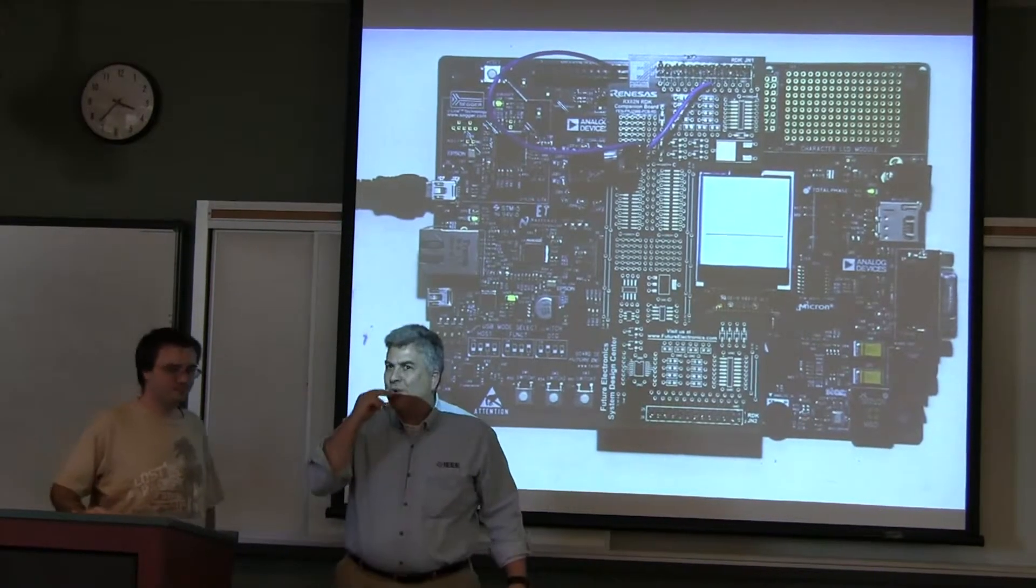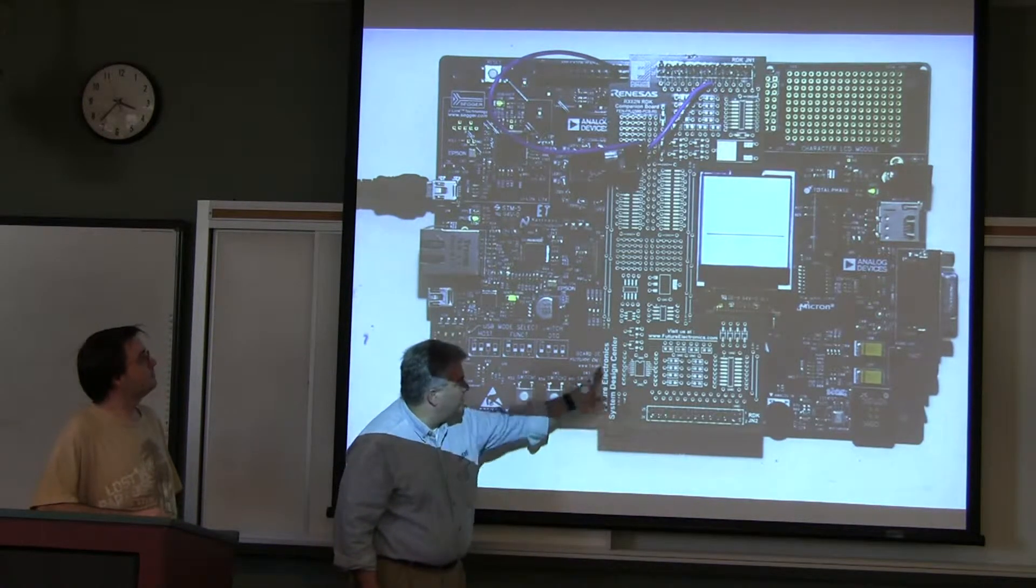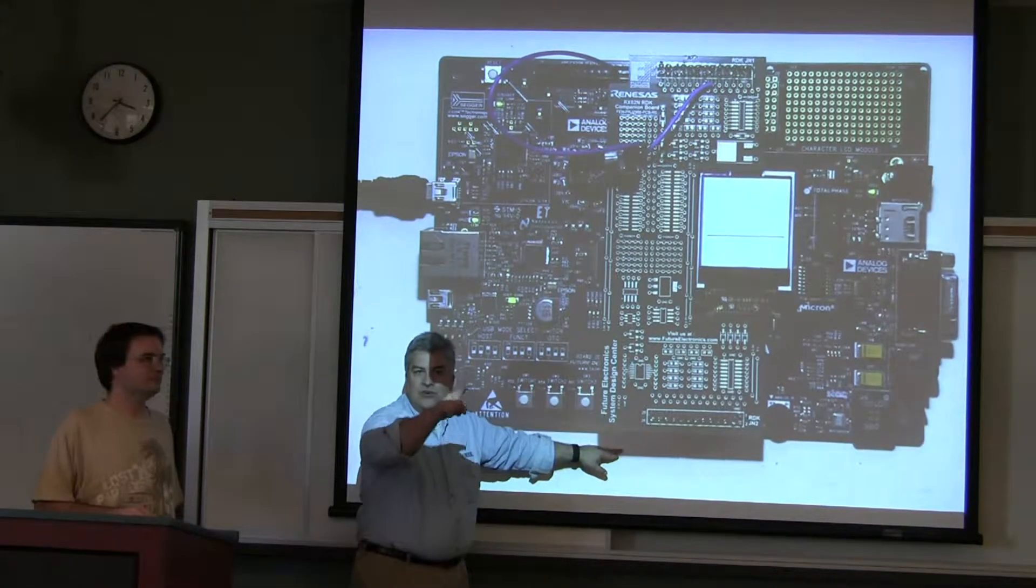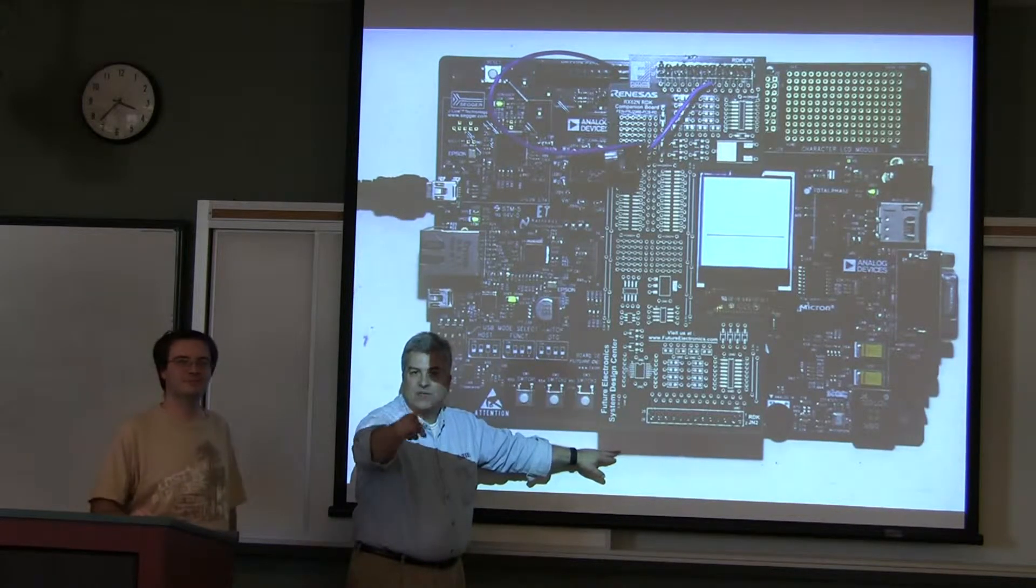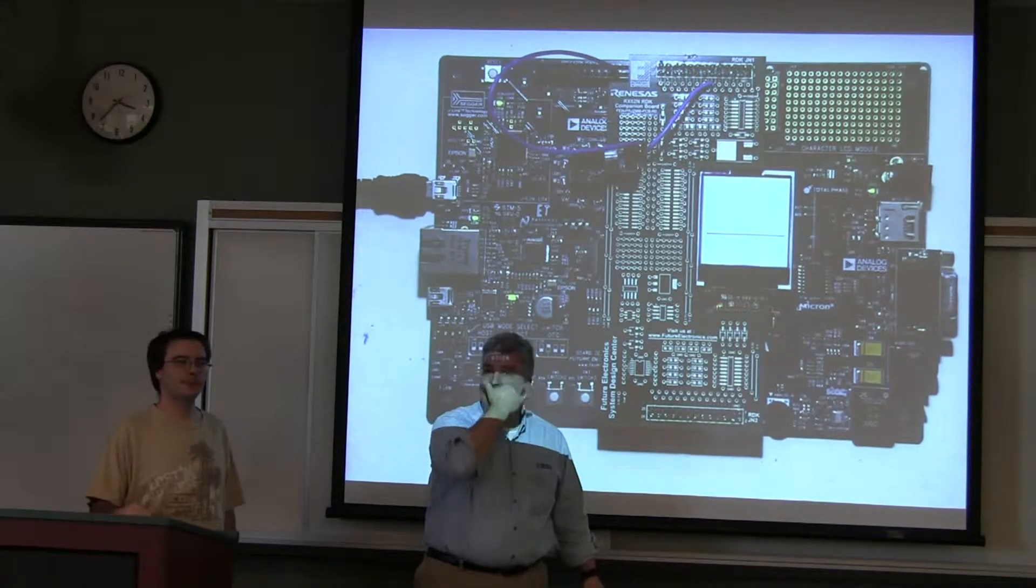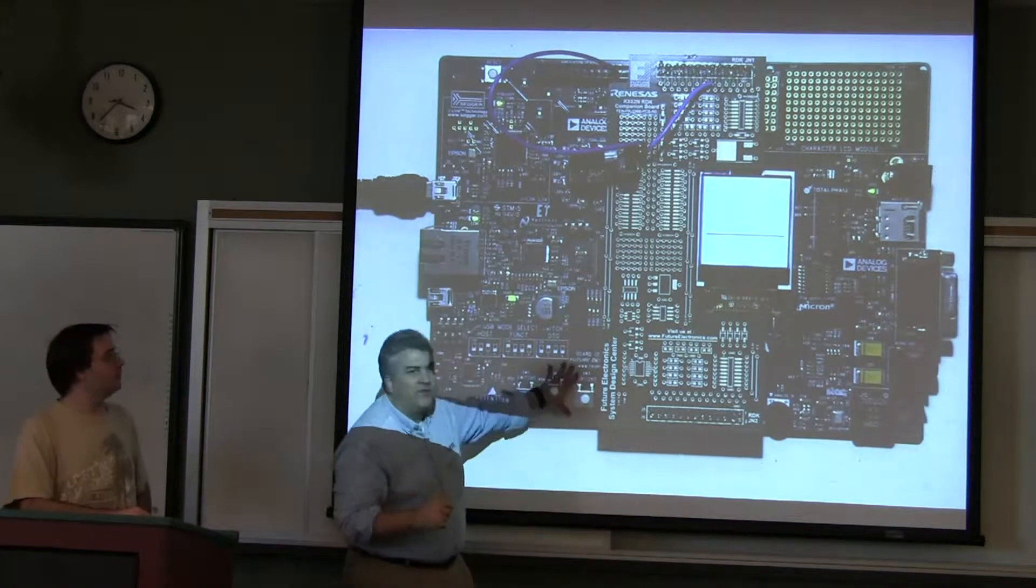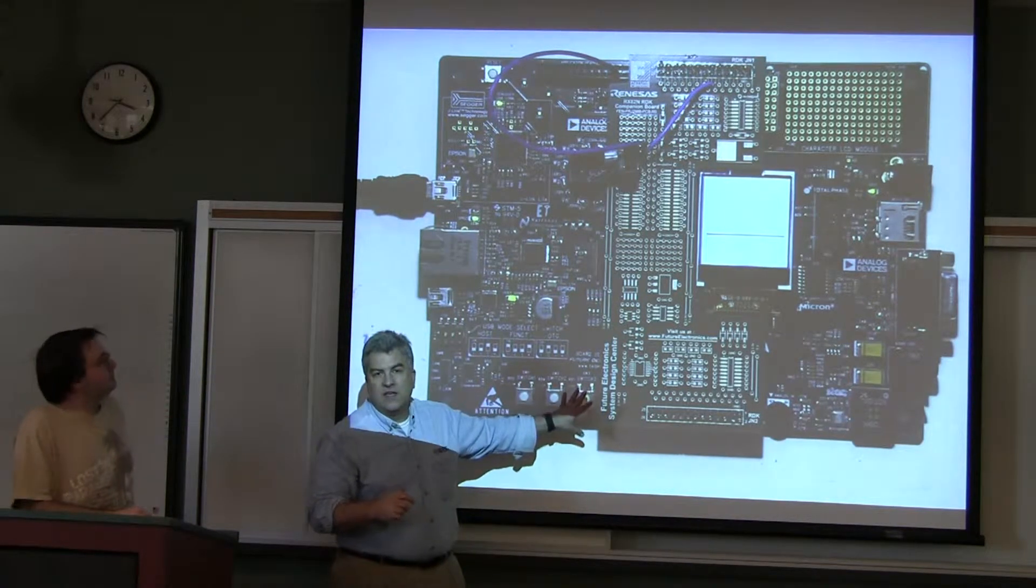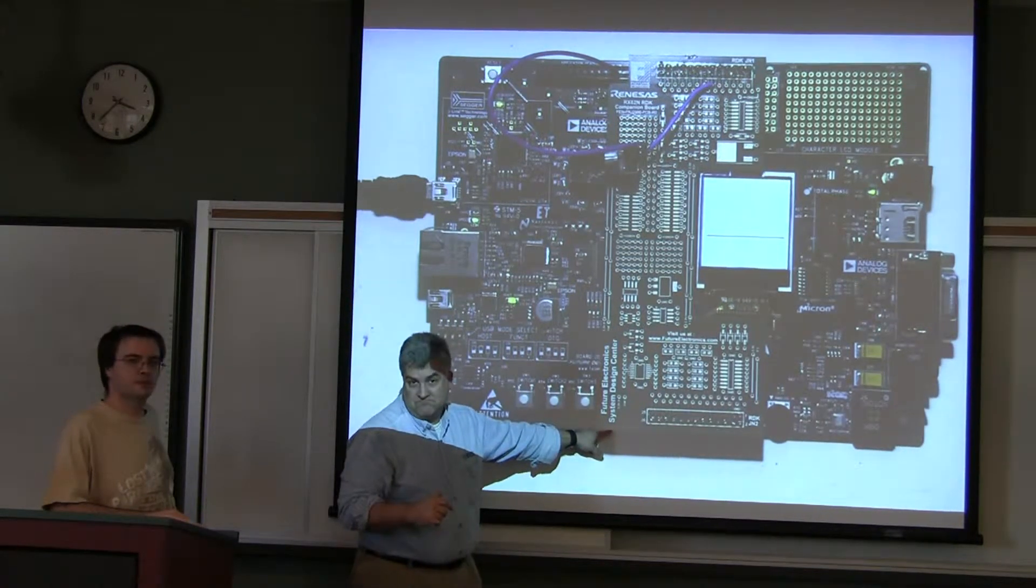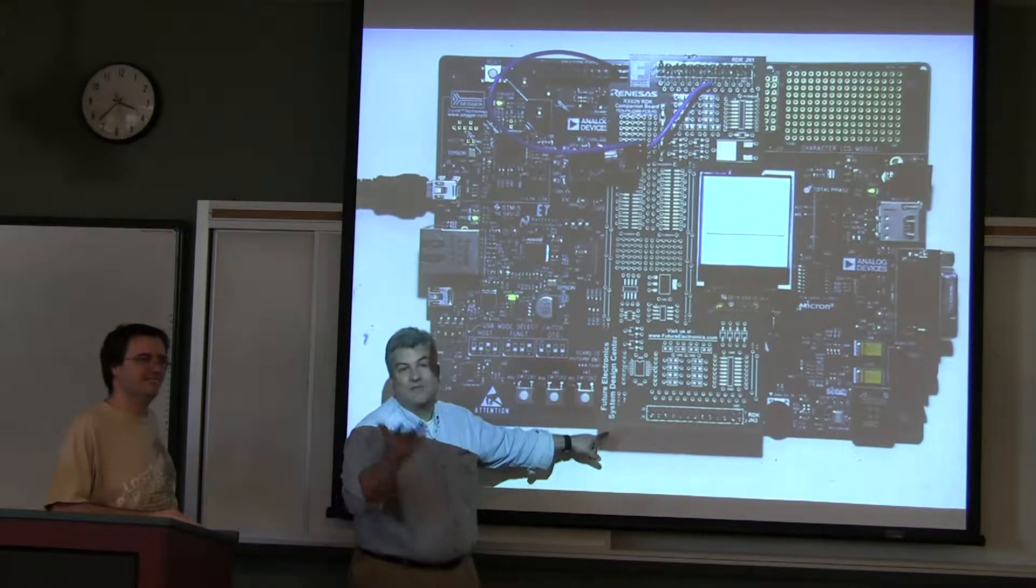By the way, question. When you ordered these boards online, how many of you actually got the Future Electronics Design Center board, the extra thing? One, two. I got three extra. You gave me one. And where did you buy these from? They were paying for Future Electronics. All right, so if you want the board from Future Electronics, you can still buy those for a penny. You can still buy these for a penny, plus shipping. Shipping is like $4 or $5.